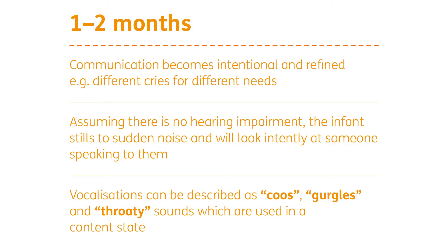Around one to two months, communication starts to become much more refined and we are moving into intentional communication. This is when some parents describe how they can interpret different cries for different needs, recognising a cry for hunger versus a cry for tiredness. Assuming no hearing impairment, an infant starts to startle at a sudden noise and will look very intently at someone speaking to them, showing readiness for listening. Vocalisations at this point can be described as coos, gurgles, and throaty sounds, generally used when a child is content.